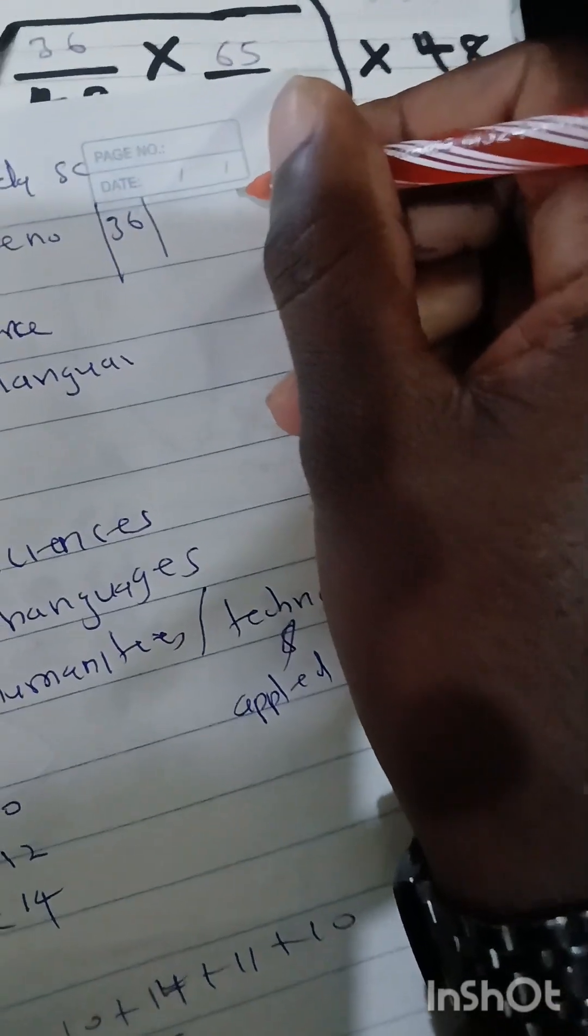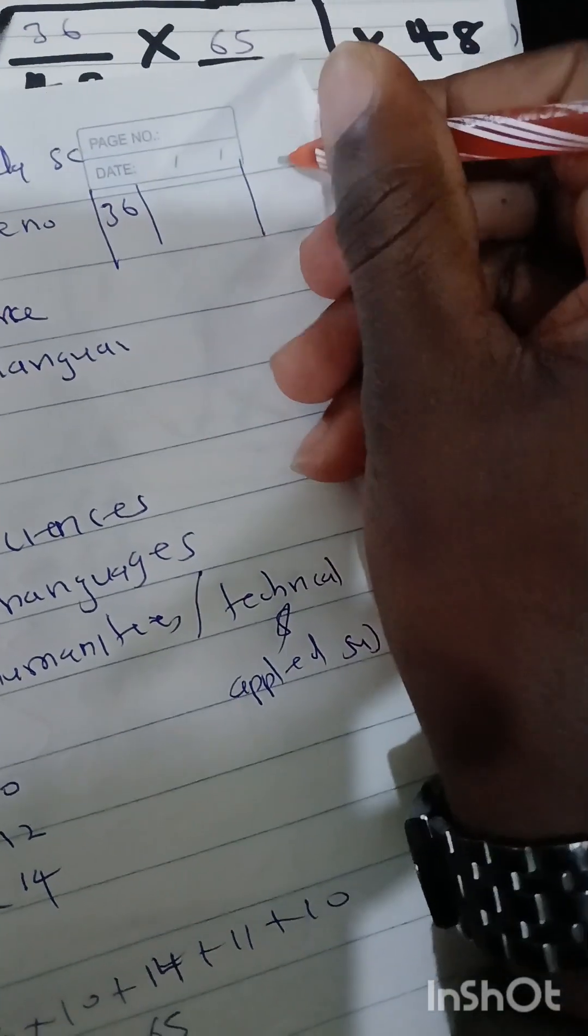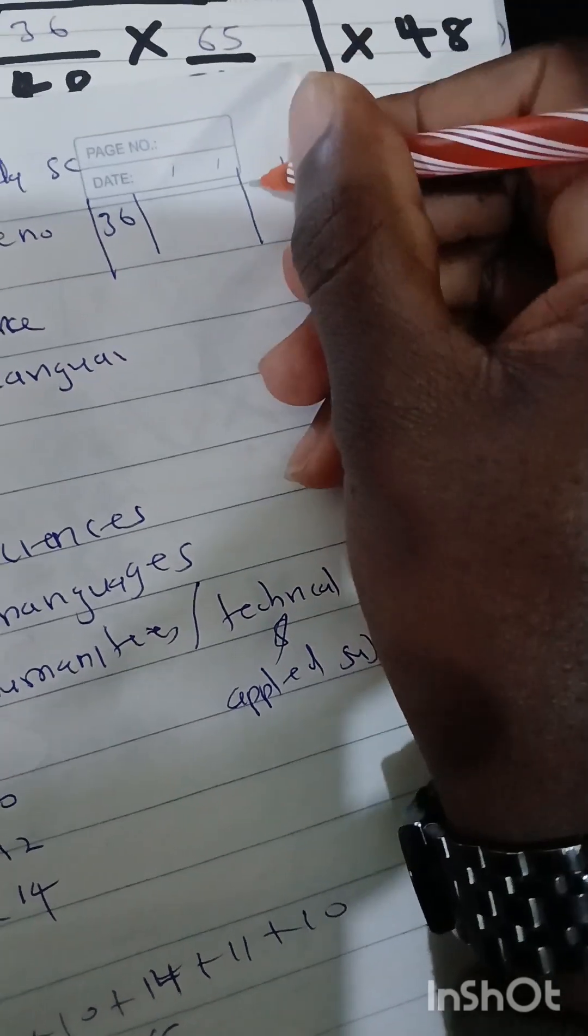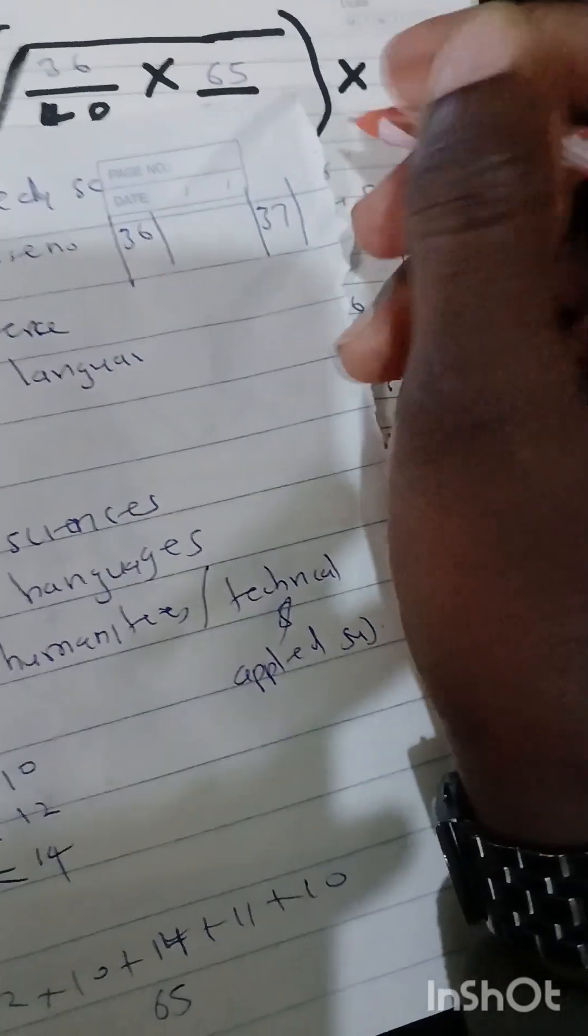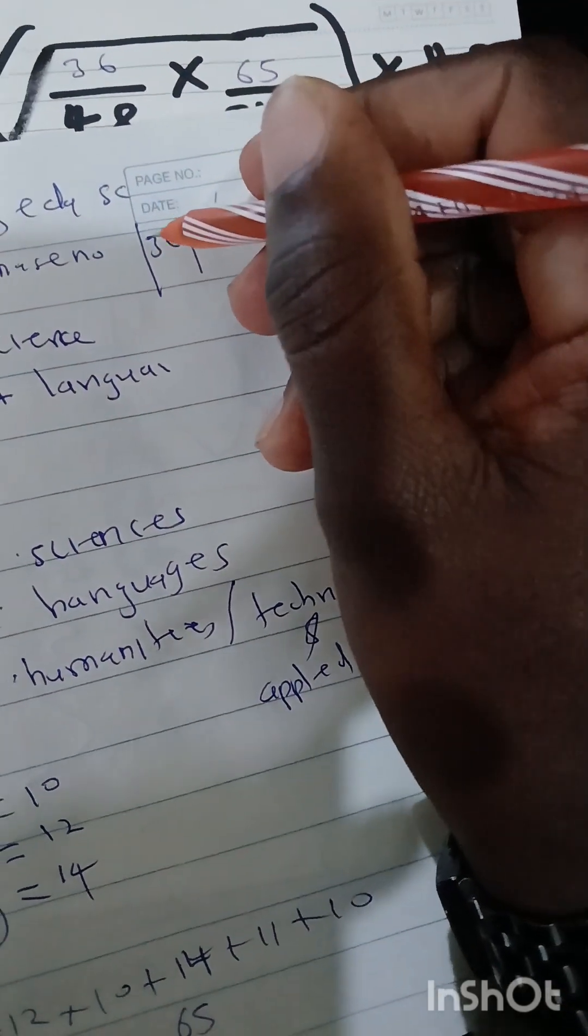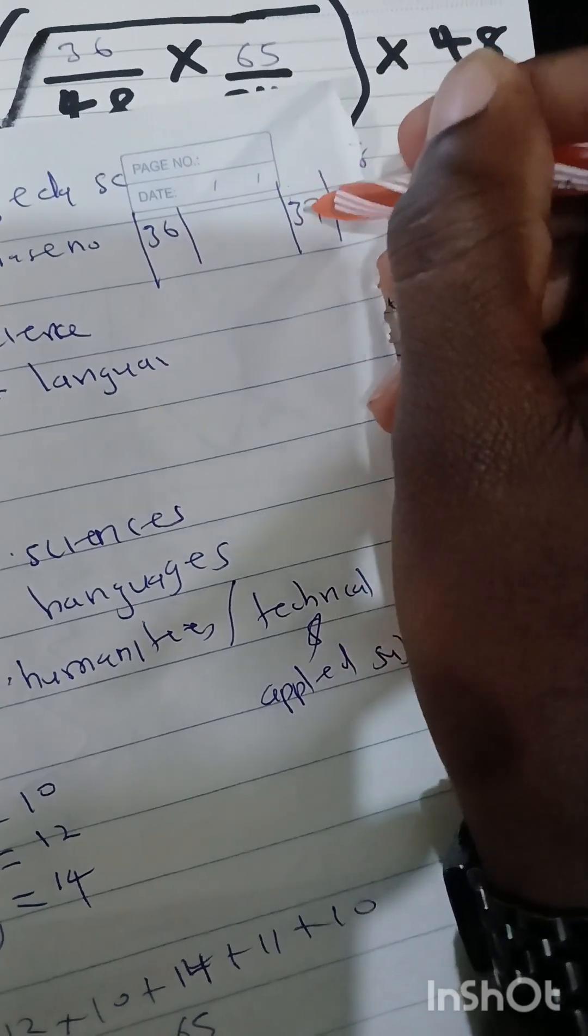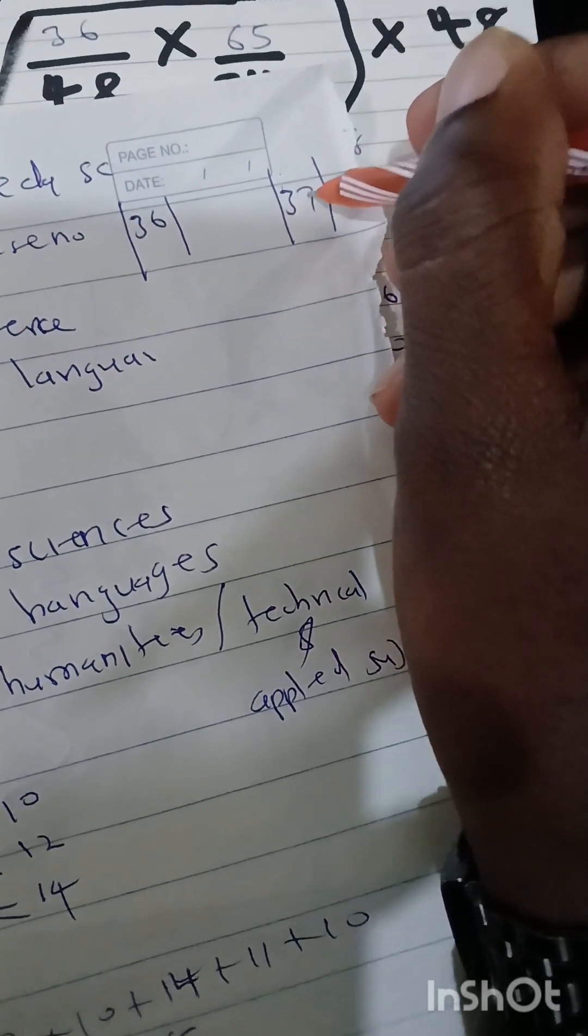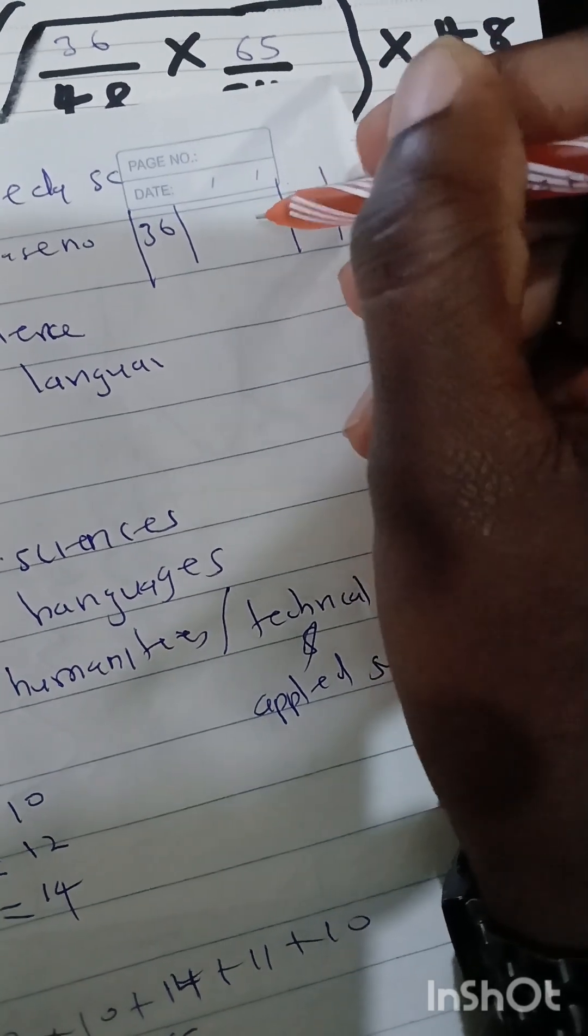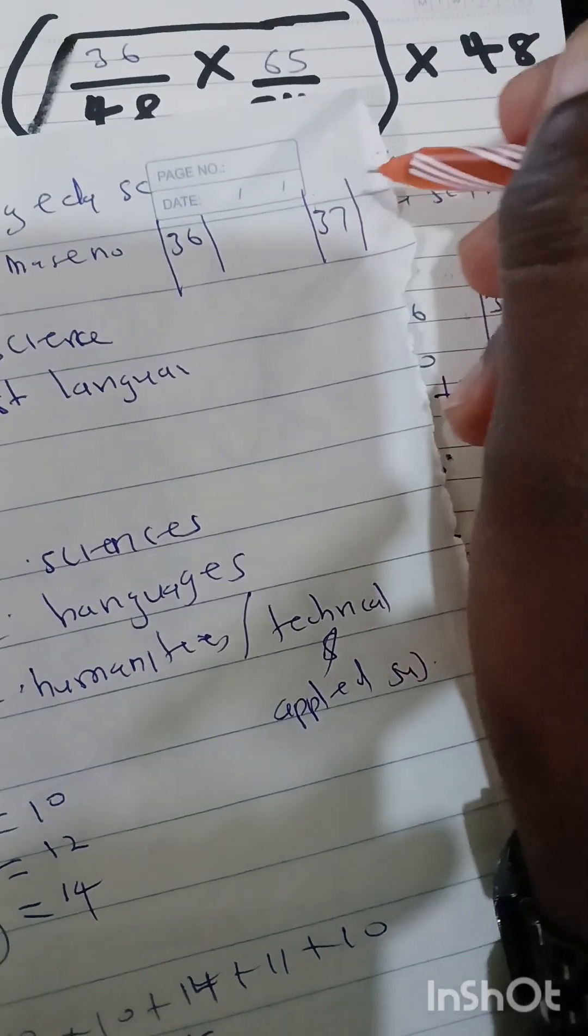Then on the last column, they will indicate the student's cluster points, which are 37. So cluster points for education science at Maseno University, 36, are less than that of the student, which are 37. It means the student qualifies for education science at Maseno University.